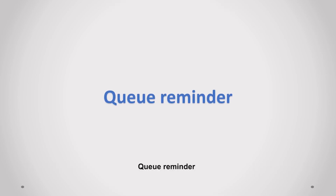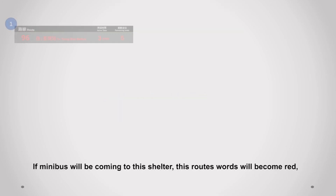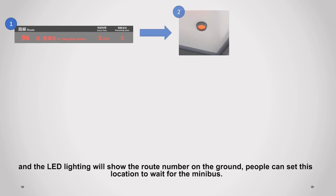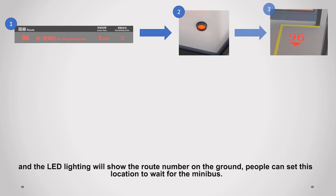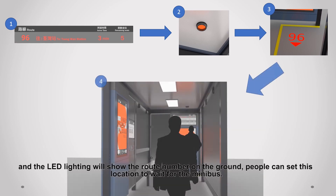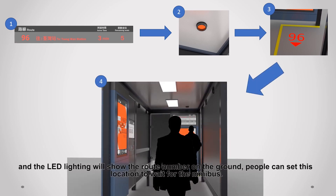The Cue Reminder function works as follows: when a minibus is approaching this shelter, that route's text will turn red, and LED lighting on the ground will display the route number. People can stand at that marked location to wait for their minibus.